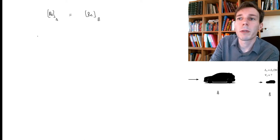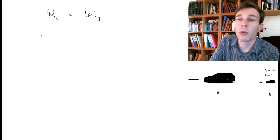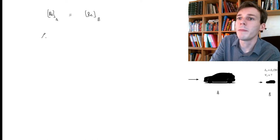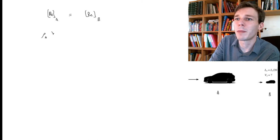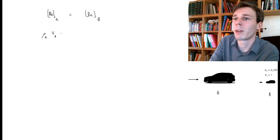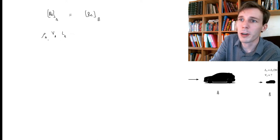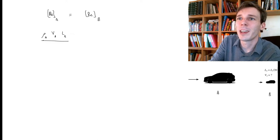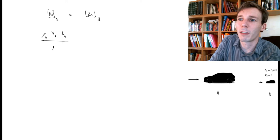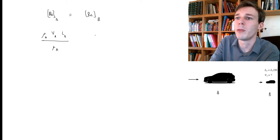The Reynolds number around the real car is ρVL over μ, so the density around the real car times the velocity coming into the real car times some representative length of the real car, divided by viscosity, that's of the air around the real car, μA.